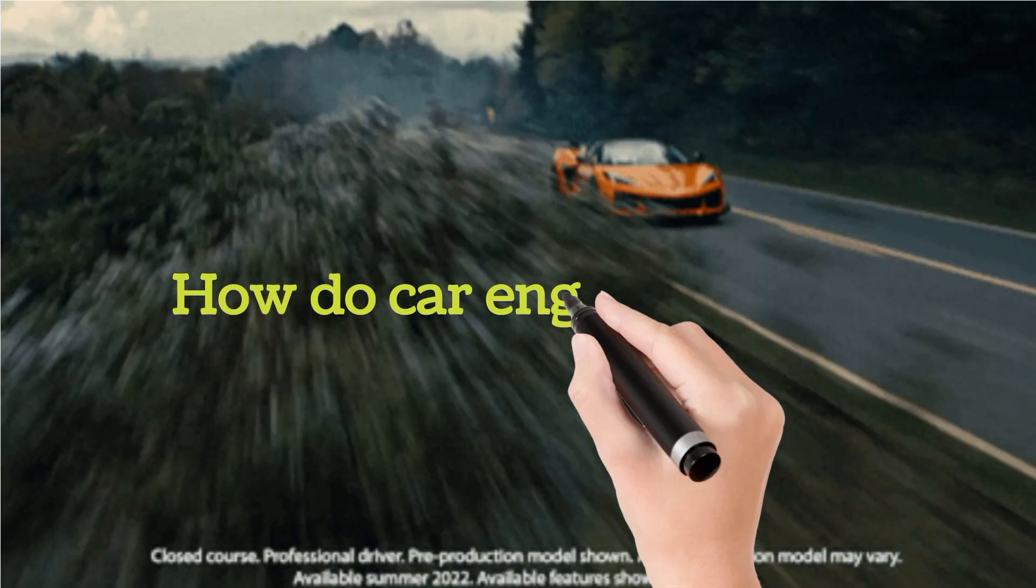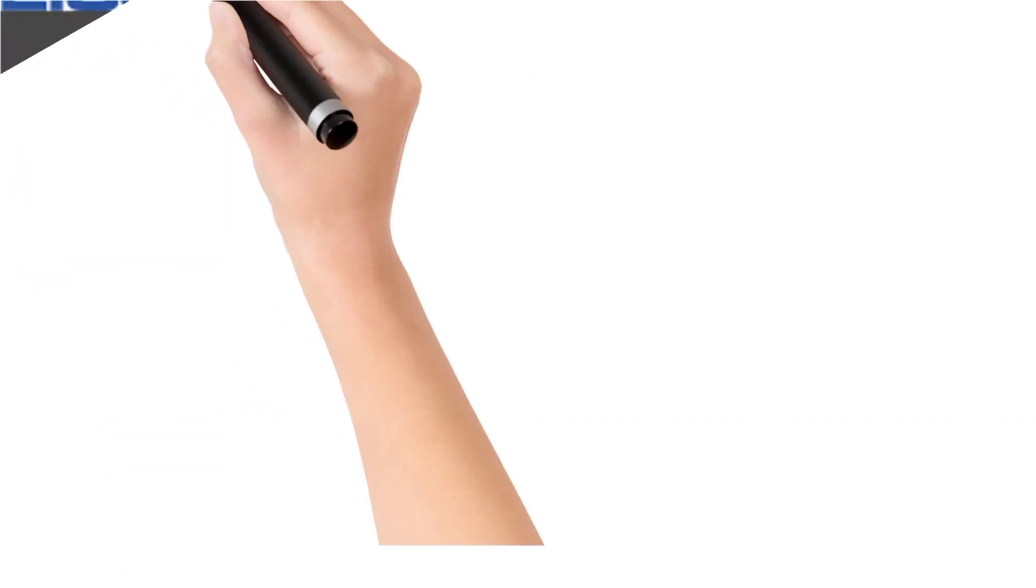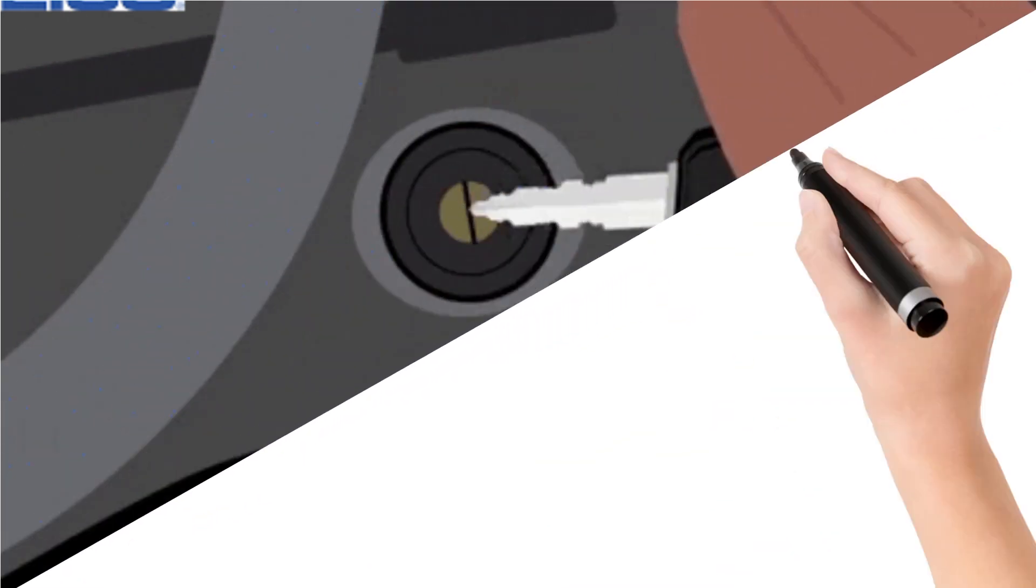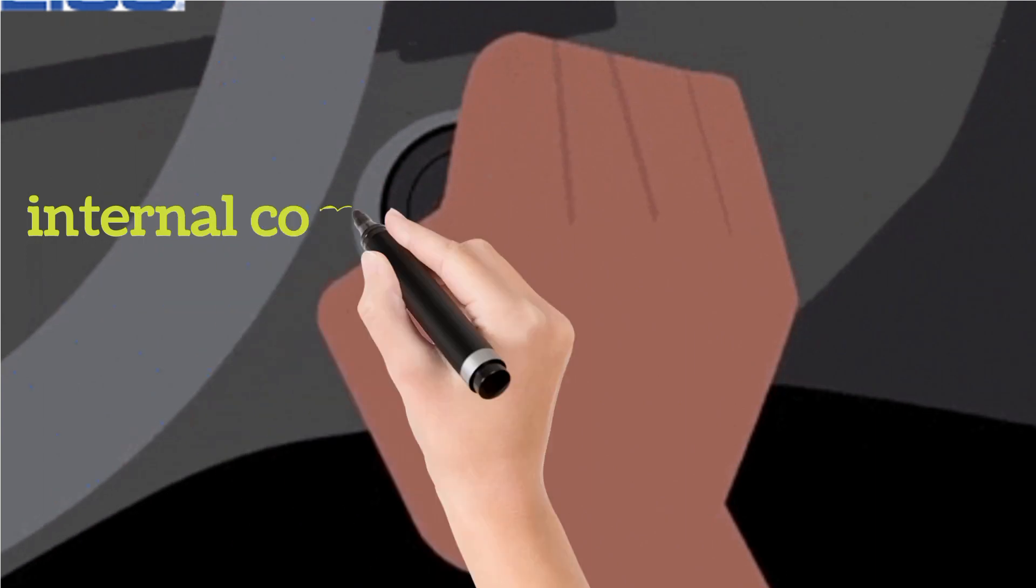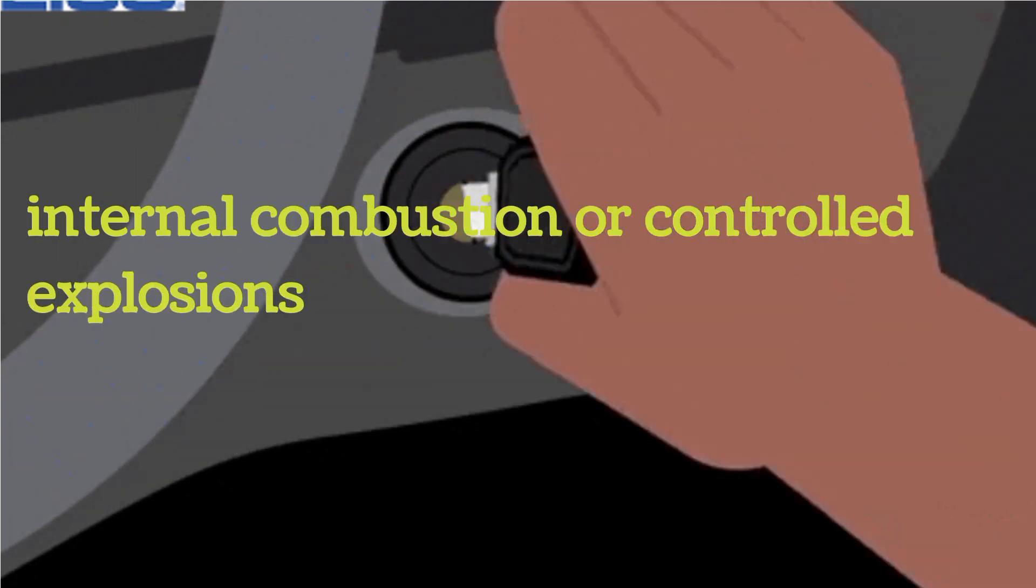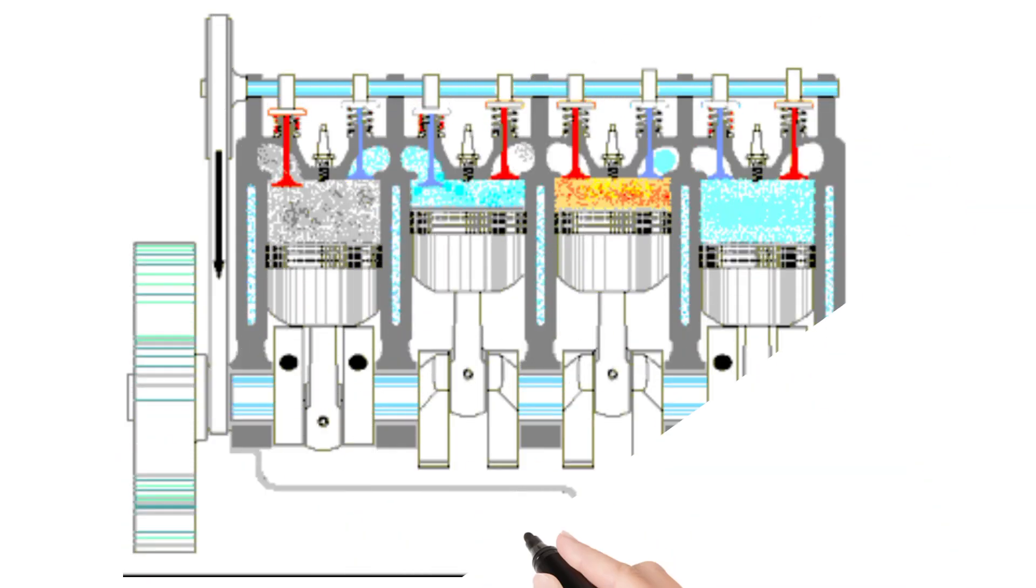How do car engines work? When you turn on the ignition key, the engine comes to life. But have you ever wondered how an engine works? Modern-day engines generate power via internal combustion or controlled explosions. This is achieved by igniting the air-fuel mixture inside the engine's cylinders.